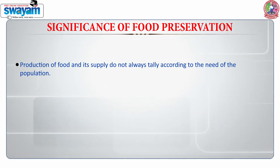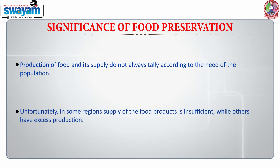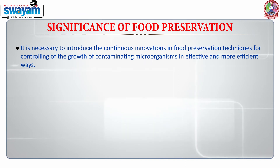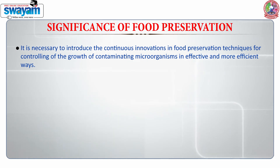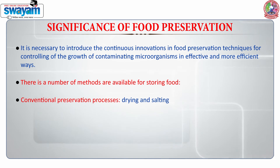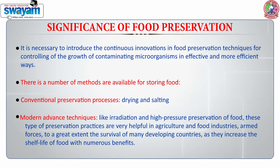The production of food and its supply do not always match the needs of the population. In some regions, supply of food products is insufficient while others have excess production. Certain foods such as juicy fruits, leafy vegetables, mangoes, tomatoes, bananas, and papaya quickly get spoiled. Hence, to improve the shelf life of food, it is necessary to increase infrastructure for proper storage and preservation, and to continuously innovate food preservation techniques for controlling contaminating microorganisms. Methods available include conventional processes like drying and salting, as well as modern advanced techniques like irradiation and high-pressure processing.